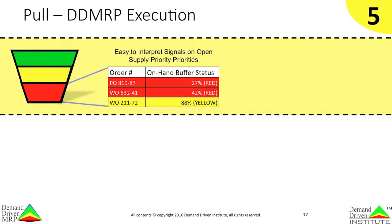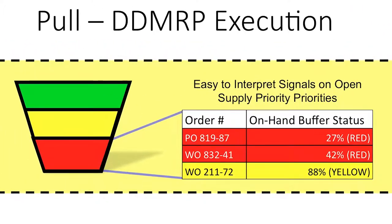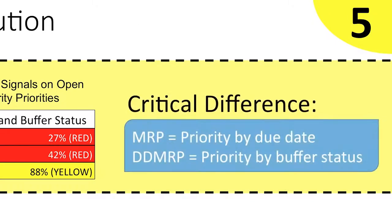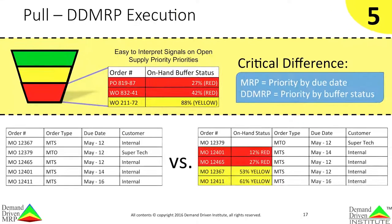This brings us to the final component of DDMRP: visible and collaborative execution. In DDMRP, execution is about the management of open supply orders. DDMRP uses easy-to-interpret signals on open supply priorities against the on-hand buffer position. The lower the on-hand level, the higher the threat to maintaining flow and the higher the execution priority. A critical difference between MRP and DDMRP is that MRP assigns priority by due date, while DDMRP assigns priority by buffer status. This will produce different views of priority — one based on arbitrary and constantly shifting due dates, while the other shows relative and real-time threats to flow that is both highly visible and intuitive.